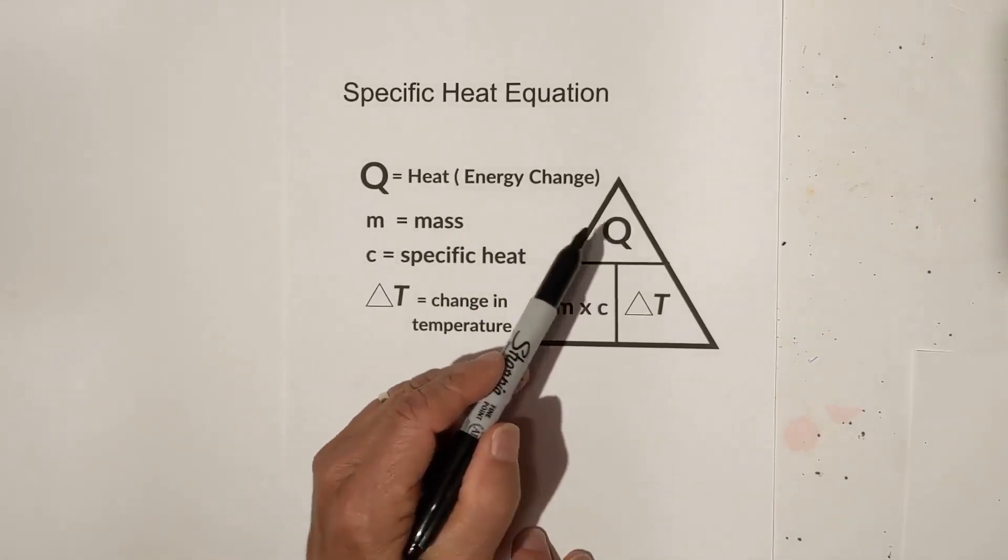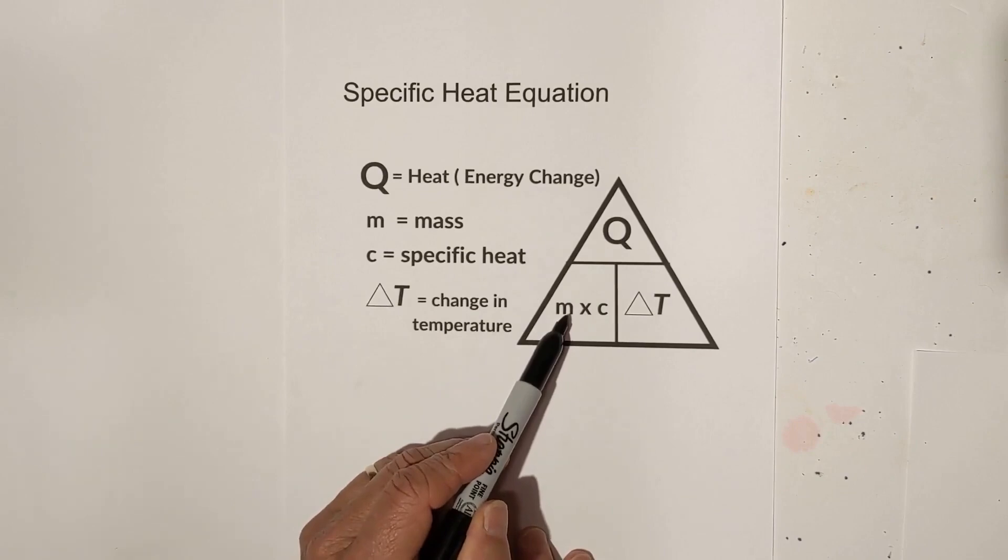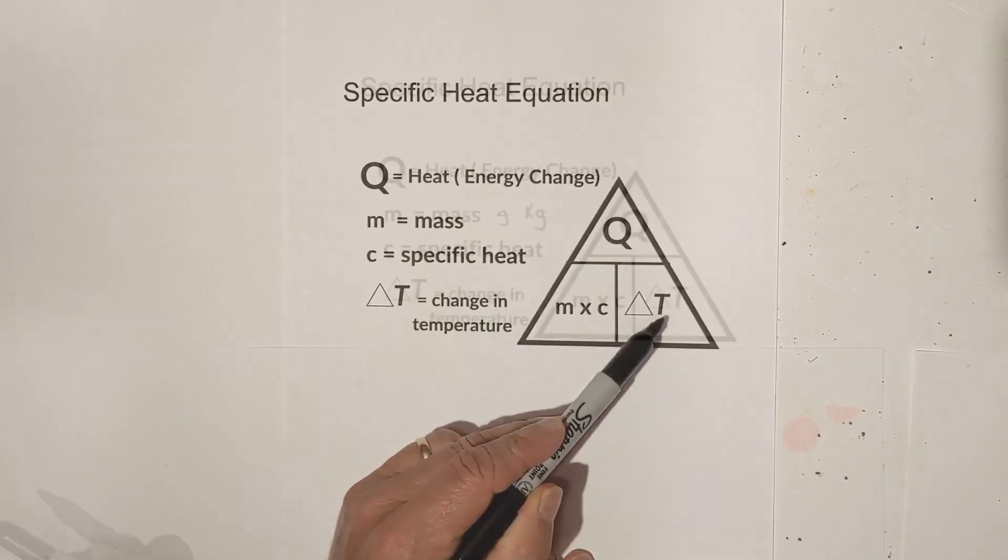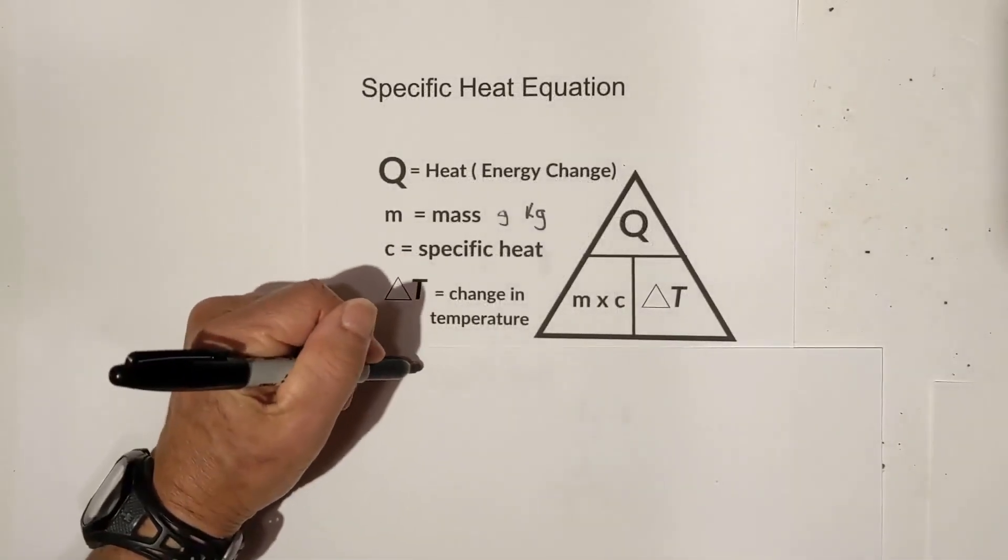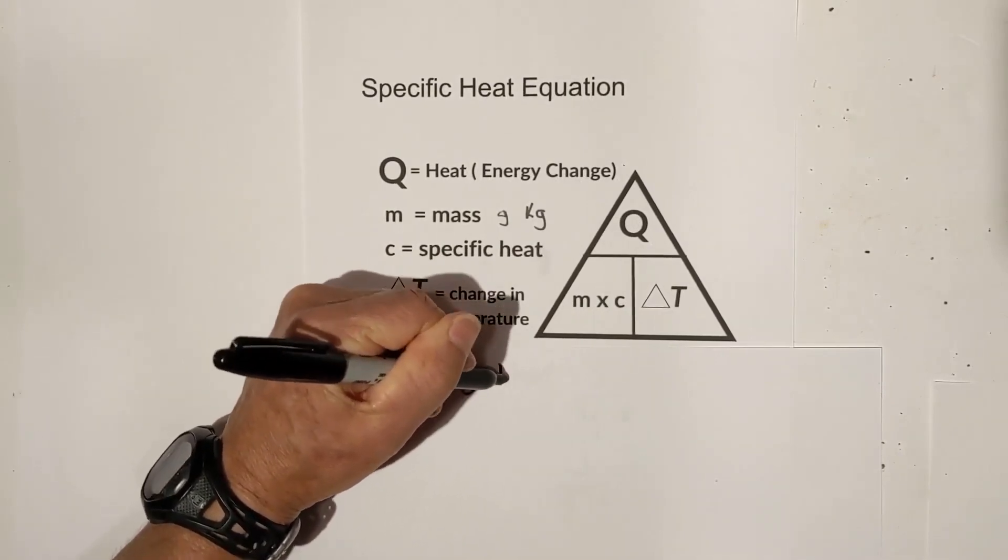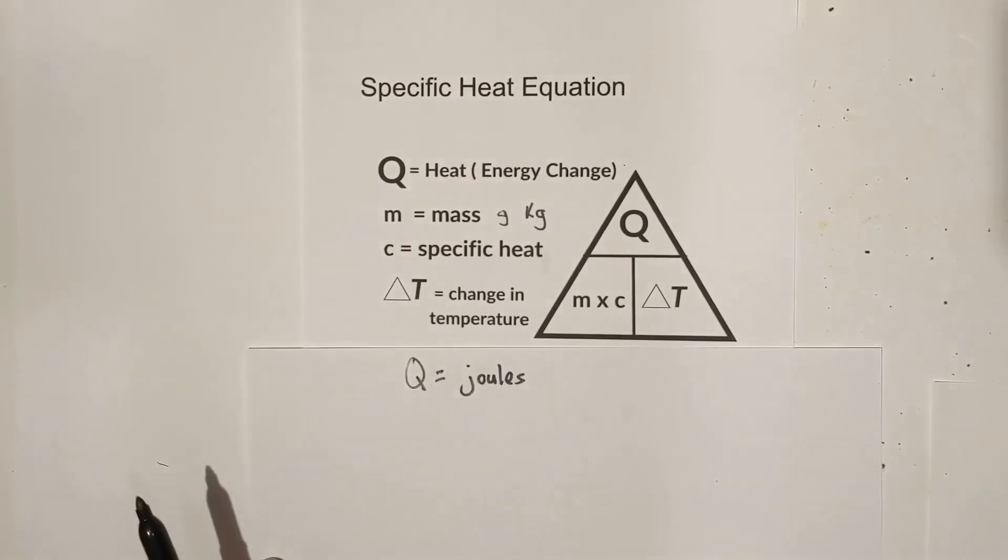Q equals mass times specific heat times change in temperature. Q is always measured in joules. Let's look at the others.